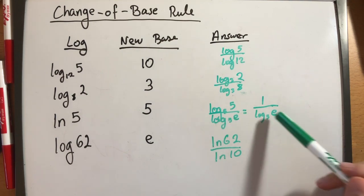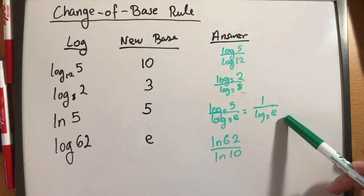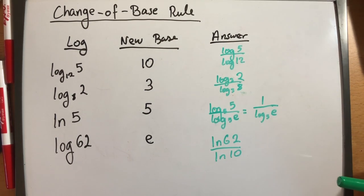Notice for this one, I was able to simplify it a little bit further because log base 5 of 5 is equal to 1. So you should simplify if you can. It makes it look cleaner.